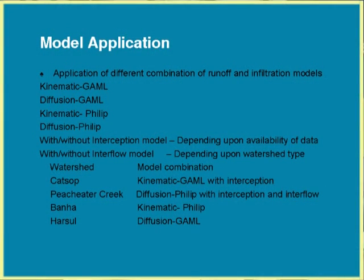This model comes in a series: depending on the infiltration model — kinematic-Green-Ampt, diffusion-Green-Ampt, kinematic-Philip, diffusion-Philip — and with or without interception, a number of models can be developed. It depends on how much data is available for the given watershed. This has been applied to different watersheds: one in Catsop, Netherlands where a good dataset was available; another watershed in the US where data collection and modeling has been ongoing for several years; and three to four watersheds in India — one of the Indian watersheds will be discussed in detail.